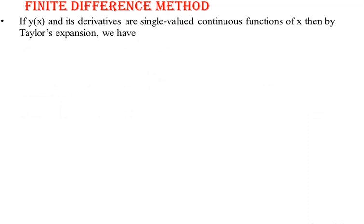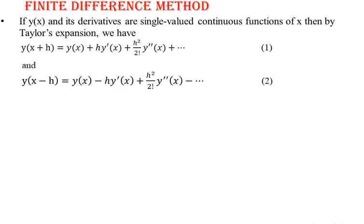If y(x) and its derivatives are single-valued continuous functions of x, then by Taylor's expansion series we can write y(x+h) = y(x) + h·y'(x) + (h²/2!)·y''(x) + ... (equation 1). Similarly, y(x−h) = y(x) − h·y'(x) + (h²/2!)·y''(x) − ... (equation 2). Equations 1 and 2 are the same expressions but with alternating sign changes in equation 2.